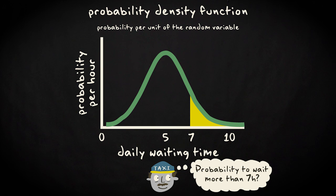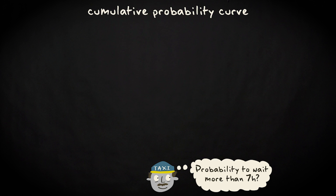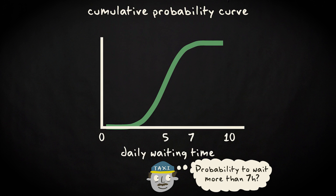On the basis of this graph you can roughly estimate the area. With the cumulative probability function you can do the same, but then more accurately, by reading the probability for the relevant values from the y-axis.